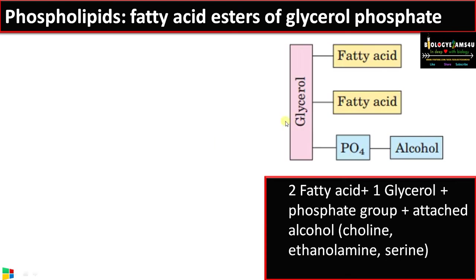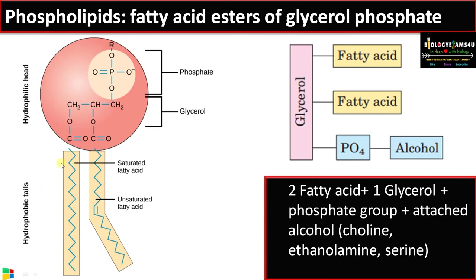Moving to the second part — phospholipids. Phospholipids are fatty acid esters of glycerol phosphate. Two fatty acids are joined to glycerol, and in the third OH group a phosphate is added along with an alcohol — which may vary, such as choline, ethanolamine, or serine. You can see two ester linkages bonded to the fatty acid molecules, then a phosphate group attached to the third carbon of glycerol, making it hydrophilic or polar, and an R group side chain that is an alcohol.